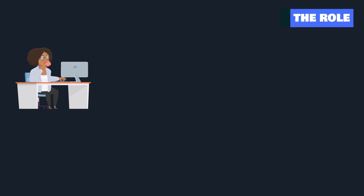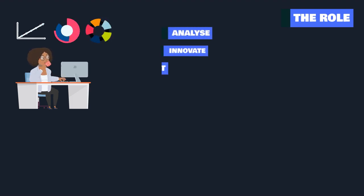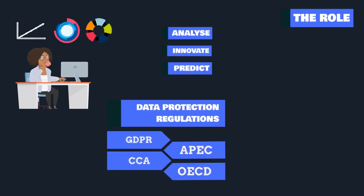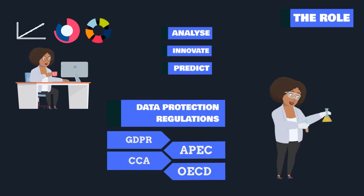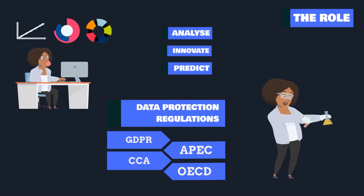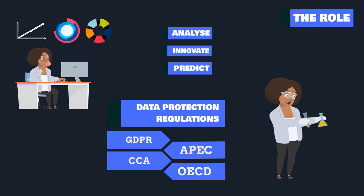What is the role of a data scientist? Armed with statistical models, a data scientist's role is to analyze, innovate, and predict. Ethical considerations guide their work, ensuring privacy and equity. In essence, data scientists are modern alchemists, transforming raw data into valuable insights that drive informed decisions.